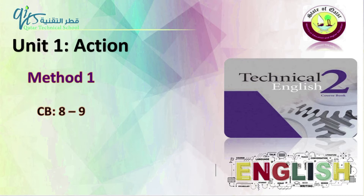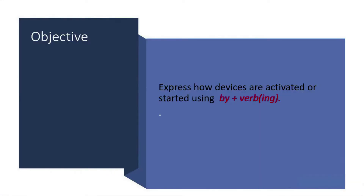Method means a way of doing something. The objective of this lesson is to be able to express how devices are activated or started using 'by' followed by a verb with -ing. And by extension, we should be able to explain how something is done if the method is an action.